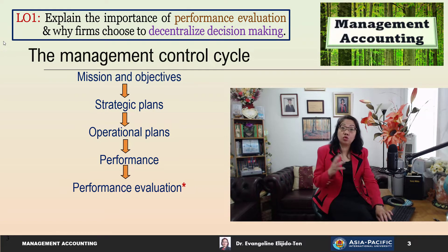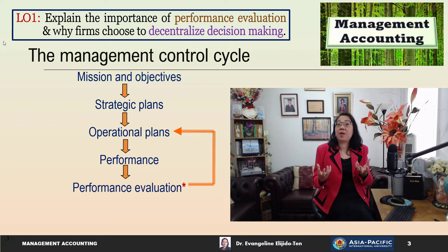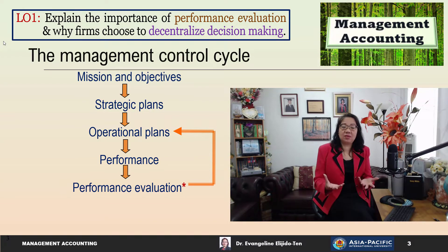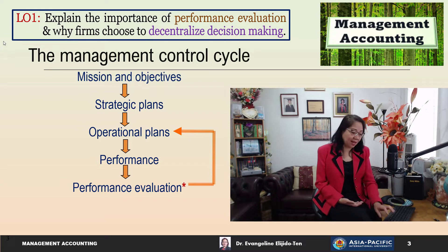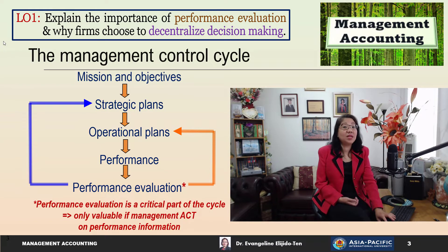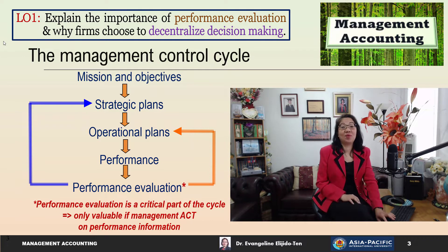Finally, there will be a need to evaluate the performance. It is called a management control cycle because once performance evaluation is conducted and there are discrepancies between actual and expected performance, you can go back and check your operational plans. Perhaps the plans were too challenging and there might be a need to adjust them, or the management could go back to the strategic plans and make adjustments. Performance evaluation is critical and is only valuable if management act on the performance information.